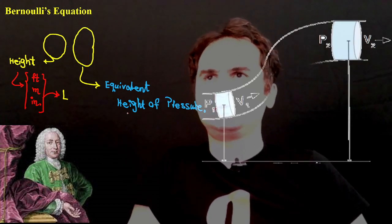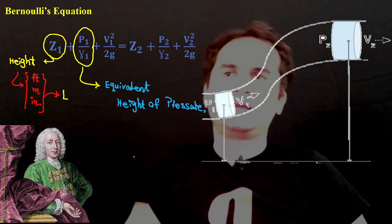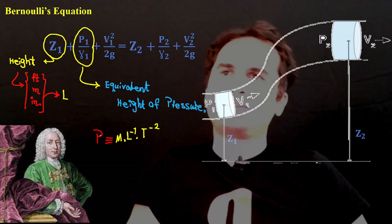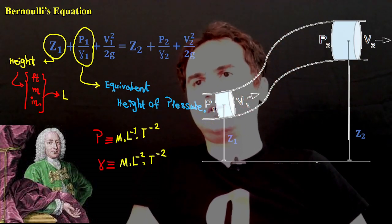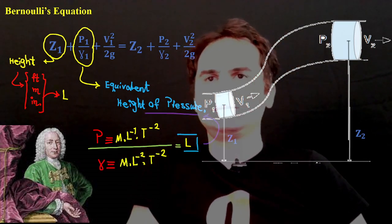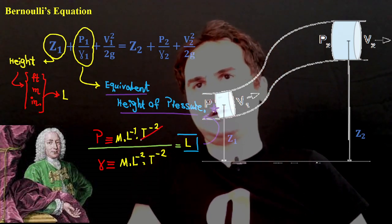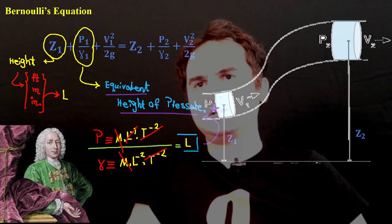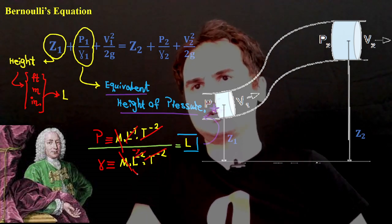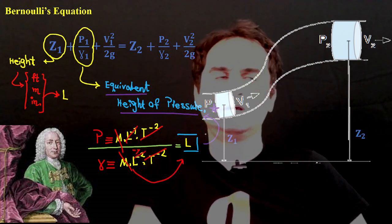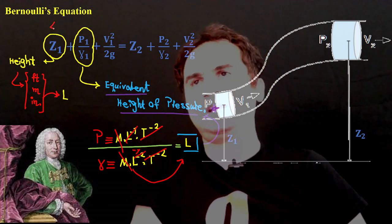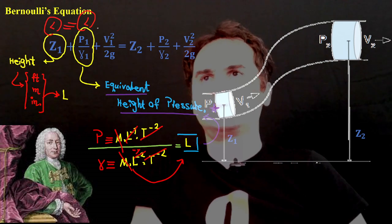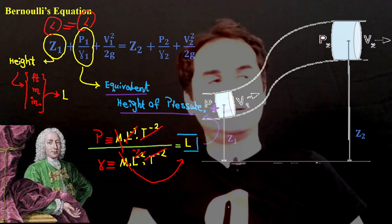Now combining p/γ in dimensional terms: the numerator is M·L⁻¹·T⁻² and the denominator is M·L⁻²·T⁻². The M cancels, T⁻² cancels, and L⁻¹ divided by L⁻² gives L. So p/γ reduces to dimension L — the same unit of length as z, confirming the second term is an equivalent height.